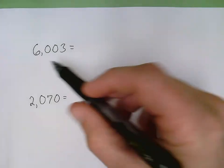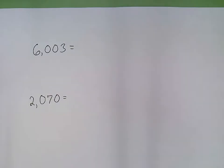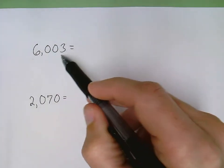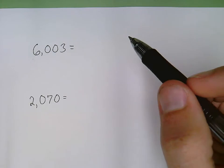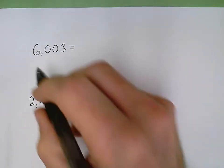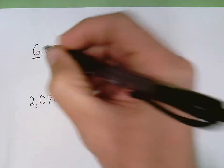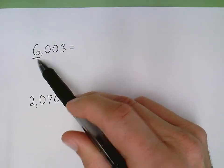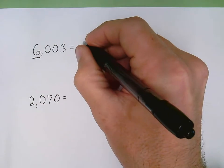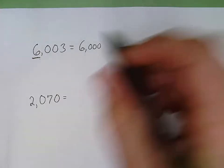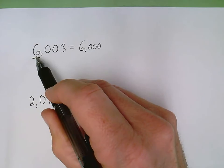We are going to go from standard form to expanded form. To write this number in expanded form, I'm going to write down the value of each of these digits. So this is 6,003. To write the expanded form, I write the value of the 6. That 6 is in the thousands place, so I write down 6,000 because that 6 is worth 6,000.